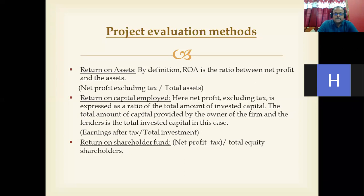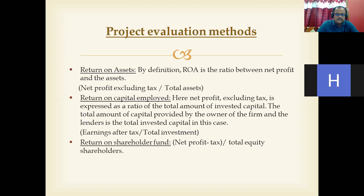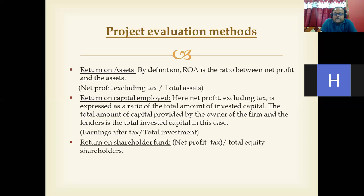Return on capital employed: net profit excluding tax is expressed as a ratio of the total amount of capital invested — the total capital provided by the owner of the firm and the lenders — that is, earnings before tax divided by the total investment. Then return on shareholders' fund, which we call EPS — earnings per share — showing what each shareholder's share of earnings is. This is calculated as profit after tax divided by the total equity shareholders.